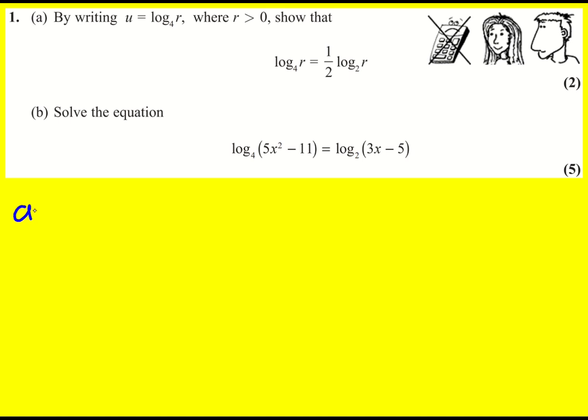So the start of this question says let u equal log to base 4 of r. And then we're trying to show that log to base 4 of r is equal to half log base 2 of r.